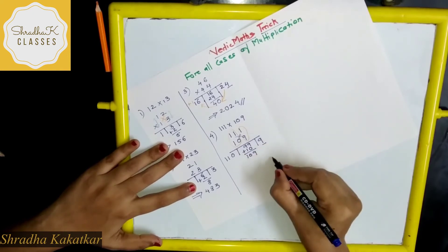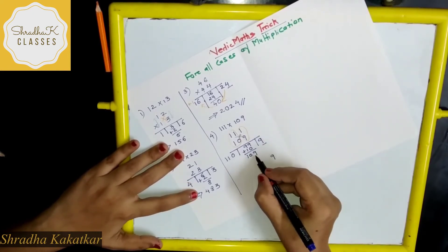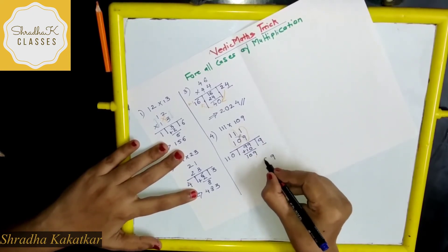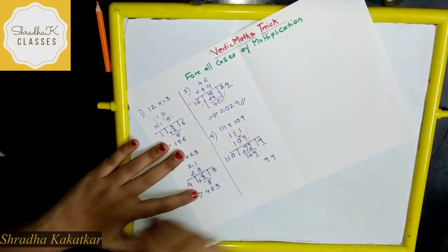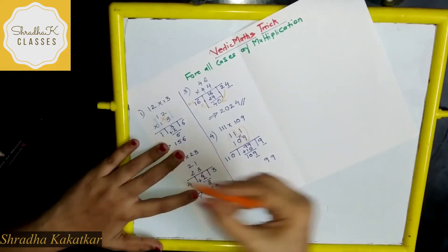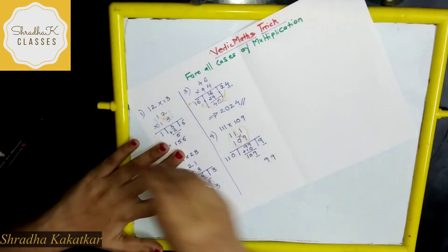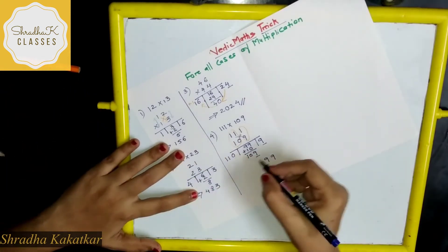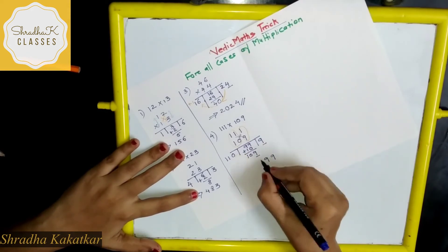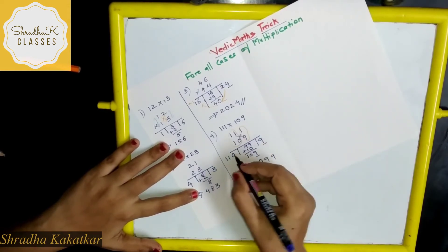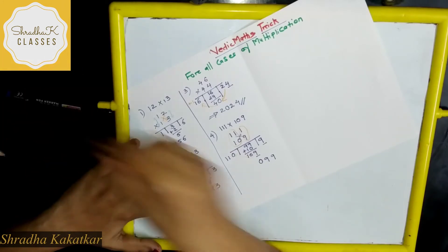Now this is single digit number. So write it as it is. Then here also write this single digit number as it is. Now 10 is carry forward. So this 10 add to 0. Again how much? What is? Which number you have to write? 0. Then again.